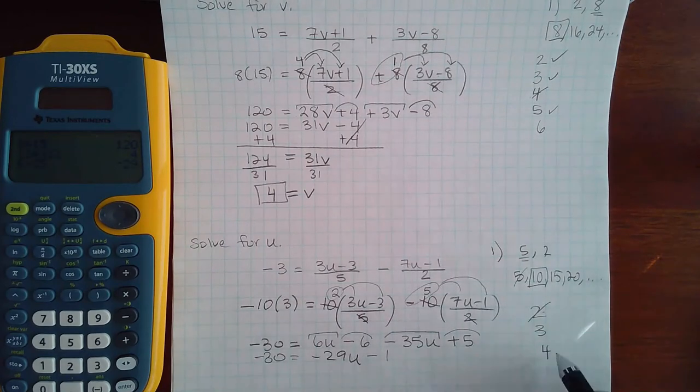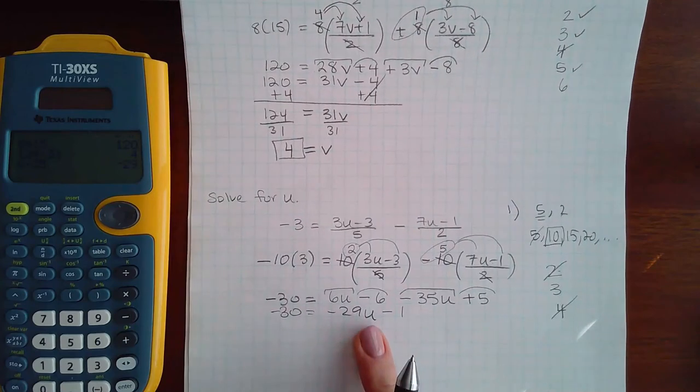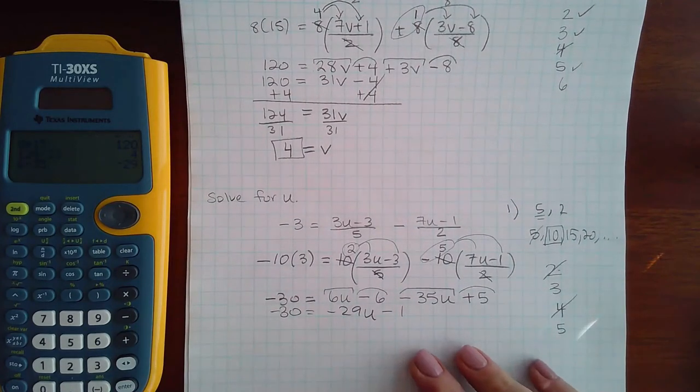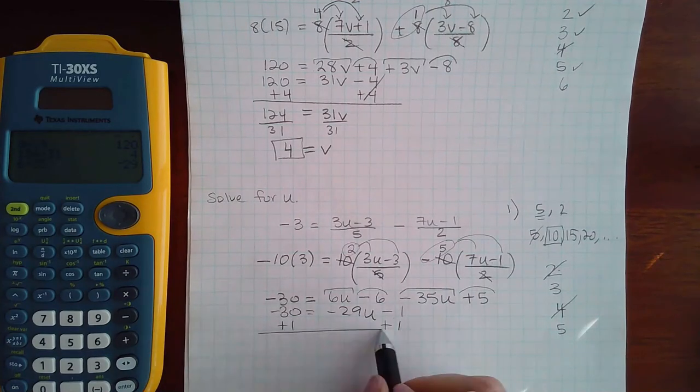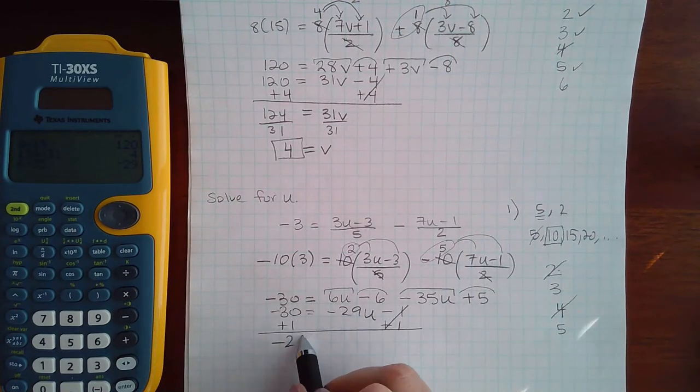Step 4, we cannot do. There's only one variable term and it's on the right side. So when I go to move to do step 5, I have to move the constant term to the other side. So I'm going to add 1 and I get negative 29.